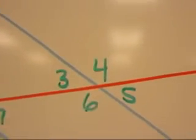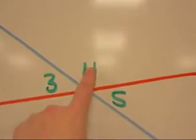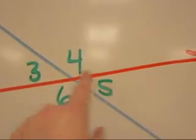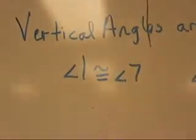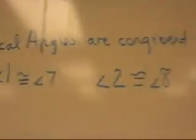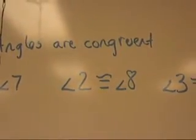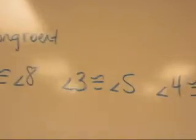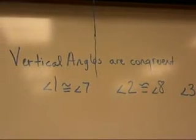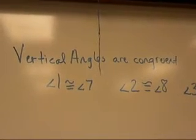Up here, with this common center point, 4 and 6 are vertical angles, and 3 and 5 are vertical angles. Because they're congruent, I would write: angle 1 is congruent to angle 7, angle 2 is congruent to angle 8, angle 3 is congruent to angle 5, and angle 4 is congruent to angle 6 — because vertical angles are congruent.